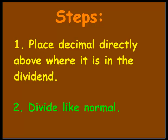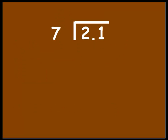The second step is to divide like normal. We're going to do this first example together, and this problem is 2 and 1 tenths divided by 7. The first step said to put our decimal directly above where it is in the dividend, up here in the quotient. This is why it's important to line up your quotient by place value, because of this decimal — if you don't put it in the right spot when you're dividing, you will get an incorrect quotient.